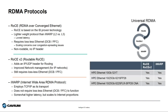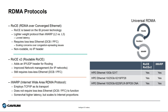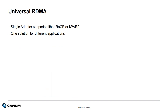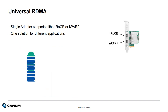At Cavium, we believe that applications shouldn't have to decide on which type of RDMA protocol they want to run on. Thus, we invented a technology we call Universal RDMA. The HPE adapters listed here support Cavium's Universal RDMA technology and can run both RoCE and iWARP concurrently, meaning one solution for different applications.